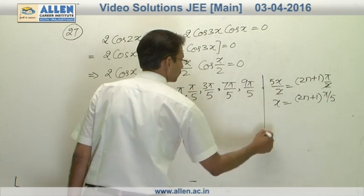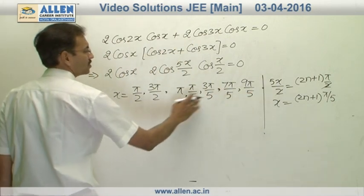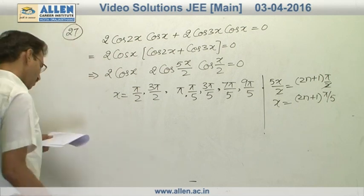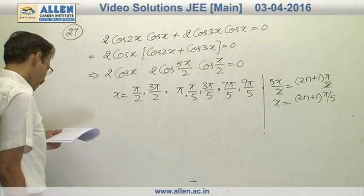Now count the solutions. These are 7 solutions. So the right choice will be 4.